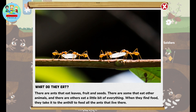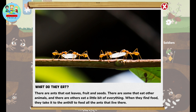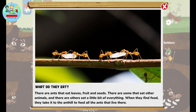What do ants eat? There are ants that eat leaves, fruit, and seeds. There are some that eat other animals, and there are others that eat a little bit of everything. When they find food, they take it to the ant hill to feed all the ants that live there.